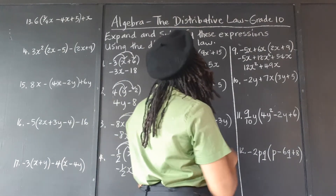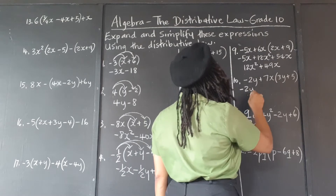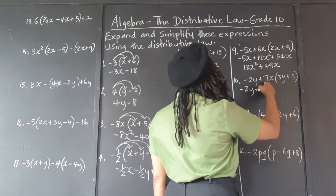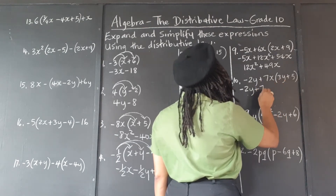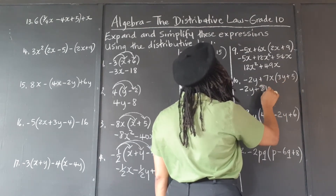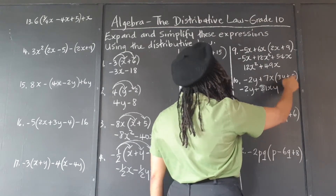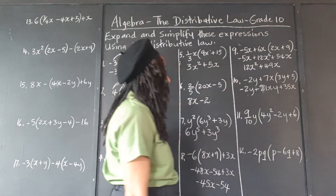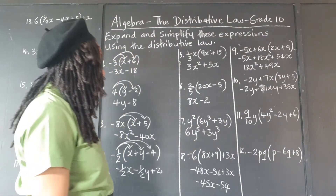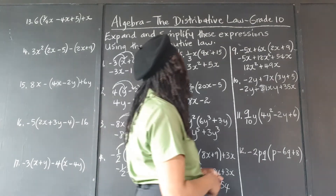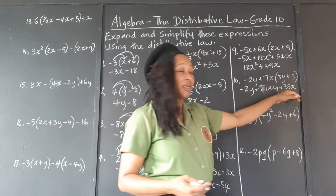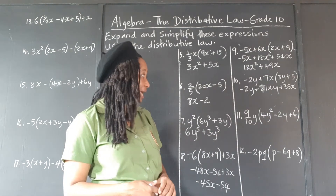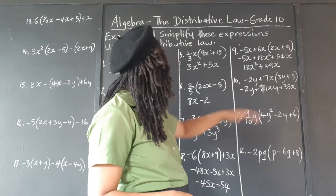So we have negative 2y — it's not affected by the brackets at all. 7x times 3y is 21xy; 7x times 5 is 35x. All those terms are different: we have a y term, an xy term, and an x term. They cannot be added or subtracted — they are all unlike terms. So this is our final answer.